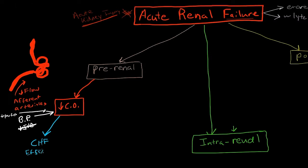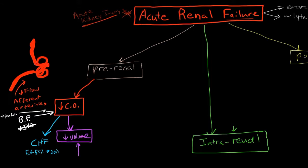For example, if a patient's ejection fraction decreases from a normal of 55% to a very low level of 20% because they've just had an acute MI and lost the function of much of their left ventricle, this will cause acute renal failure due to acute congestive heart failure. The most common cause of hypotension is often volume depletion. With decreased volume you're going to see decreased jugular venous distension, whereas with CHF you'll actually see increased jugular venous distension — a useful distinction to keep in mind.